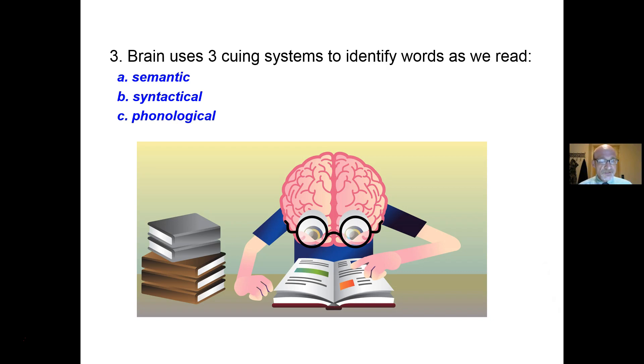The brain uses three cueing systems to identify the words as we read: the semantic context, syntactical grammar word order, and the phonological letter sounds. We need activities and instruction to develop all three.